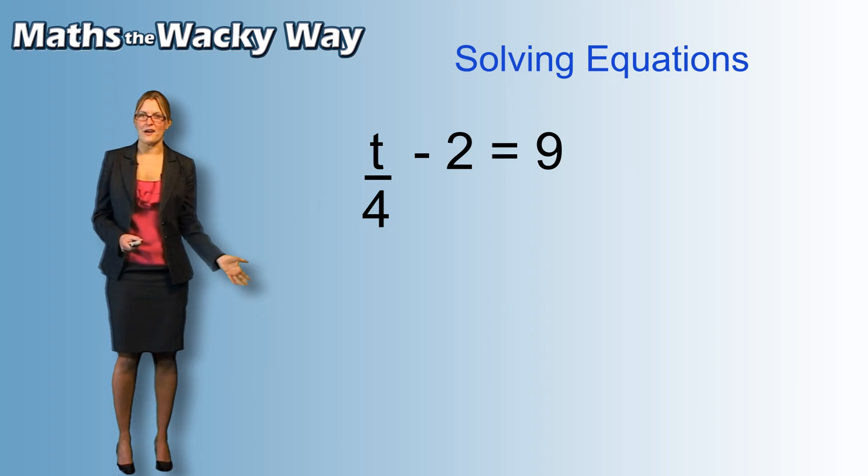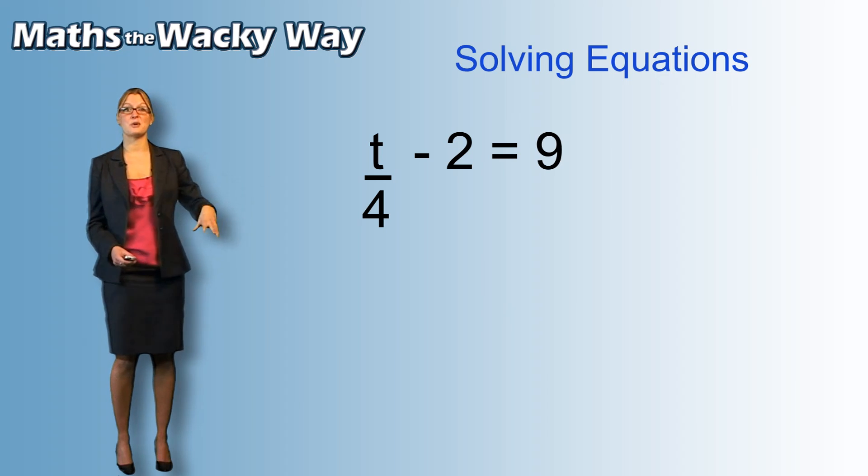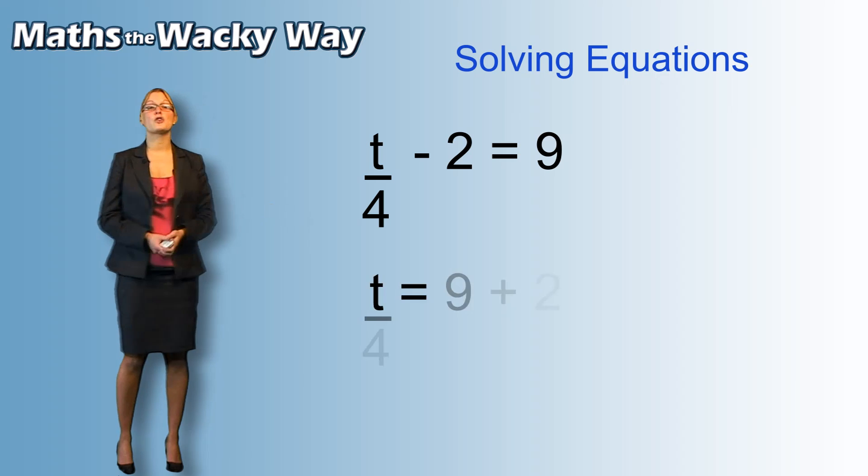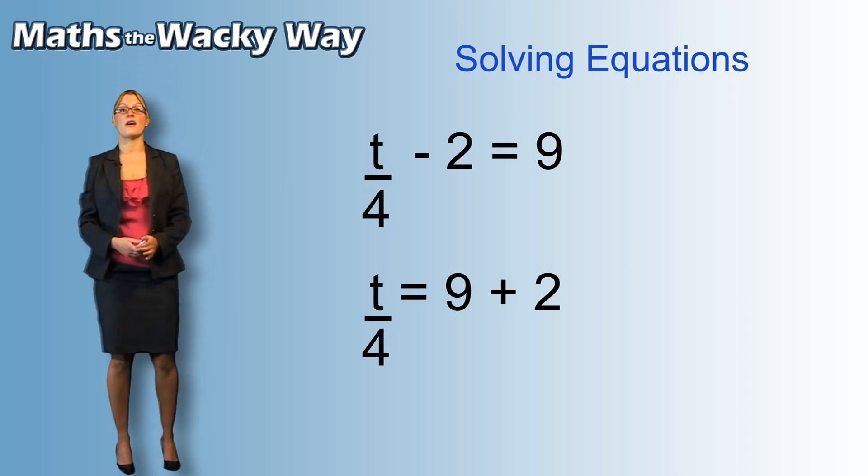So, what are we going to move first? Well, it's the 2. He's on his own. 2 is going to go to the other side, he's going to cross the equal sign and he gets a high five.